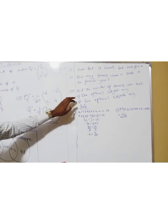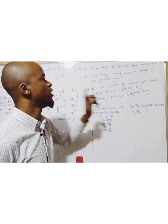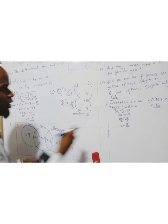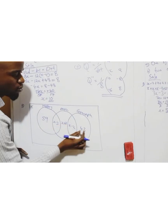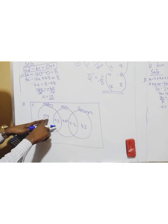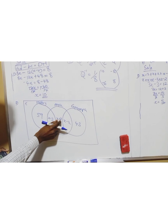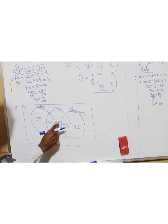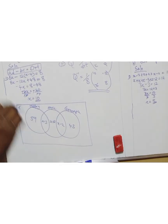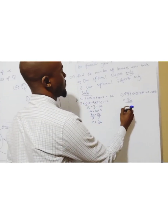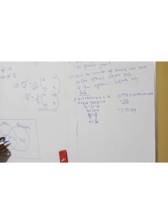Find the number of learners who took one optional subject only. Only this section — only the part for history, only the part for music's exclusive region, only for geography. So one optional subject only: we have 59 for history, plus the music-only learners which is 5 plus 2 giving 7, plus 43 for geography. This gives us 109.